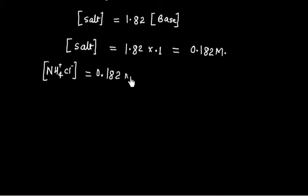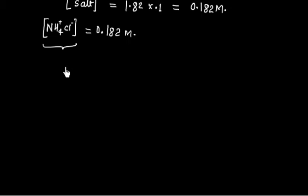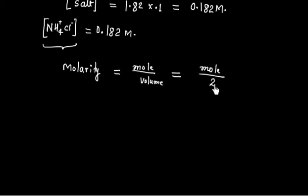Now we have to calculate moles of ammonia, ammonium ion or ammonium chloride. So we can use molarity equals moles by volume. Volume of solution is given, that is 2 liter.